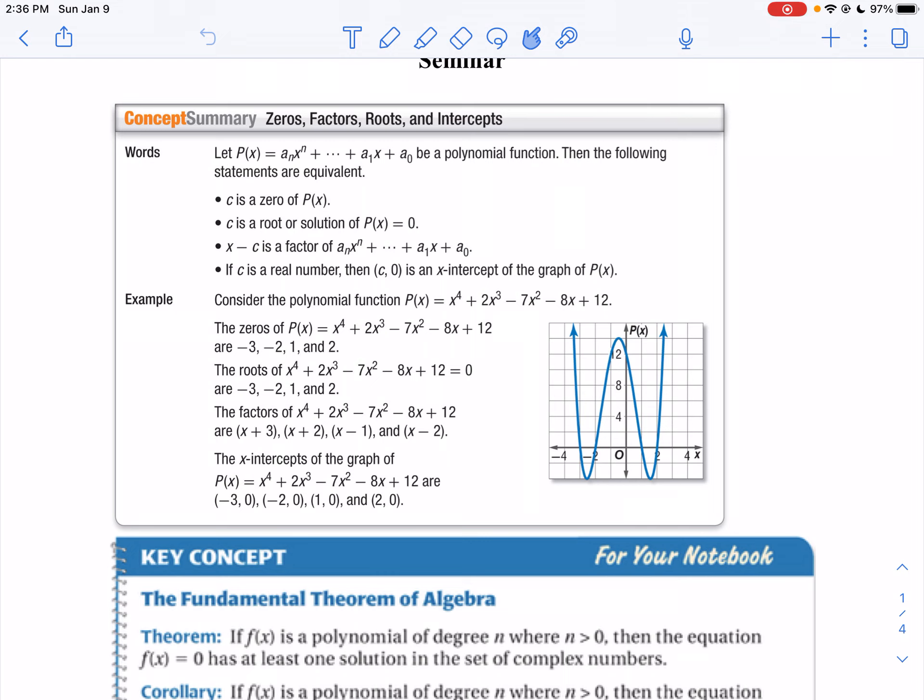The first thing I want you to notice is we have some vocabulary words that are very similar depending on what you're given. Zeros, factors, roots, and intercepts. They're all the same number. It's just how you use them.